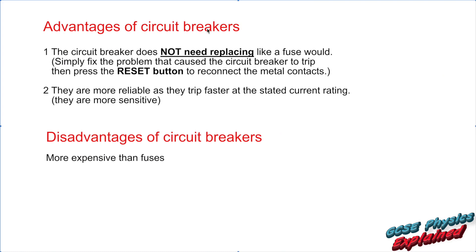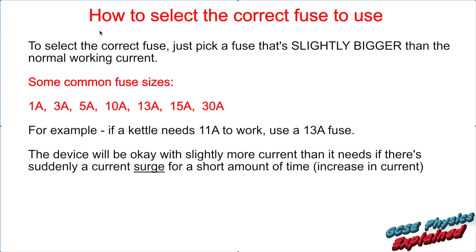An advantage of circuit breakers is that they do not need replacing like a fuse. You simply fix the problem that caused the circuit breaker to trip, then press the reset button to reconnect the metal contacts. They are also more reliable as they trip faster at the stated current rating — basically more sensitive. If it's rated at three amps, it trips at three amps straight away, rather than having to wait for the wire to heat up and melt like a fuse. A disadvantage is that circuit breakers are more expensive than fuses.